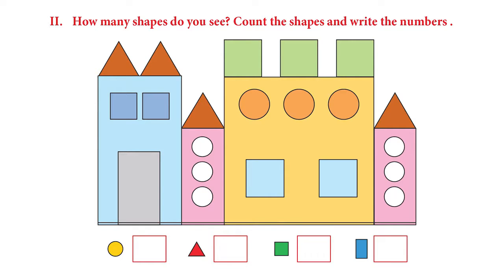Let's see circles first. Let's count and see how many circles are hidden in this picture. We have one, two, three, four, five, six, seven, eight, nine. You're correct — we have nine circles. Let's try triangles now. One, two, three, and four. We have four triangles.